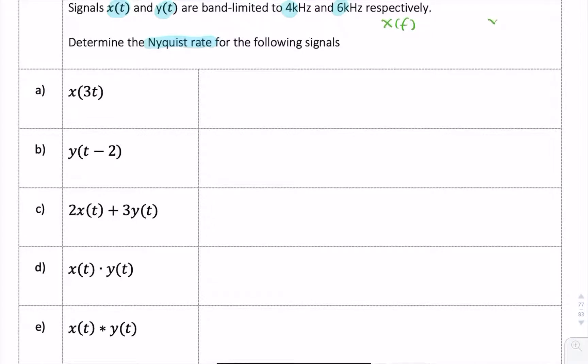Even though we don't know what these signals are like, it shouldn't prevent us from imagining their spectra. So this is a function of F. X is band limited to 4 kilohertz, so that means X only exists within this range from minus 4 kilohertz to 4 kilohertz.